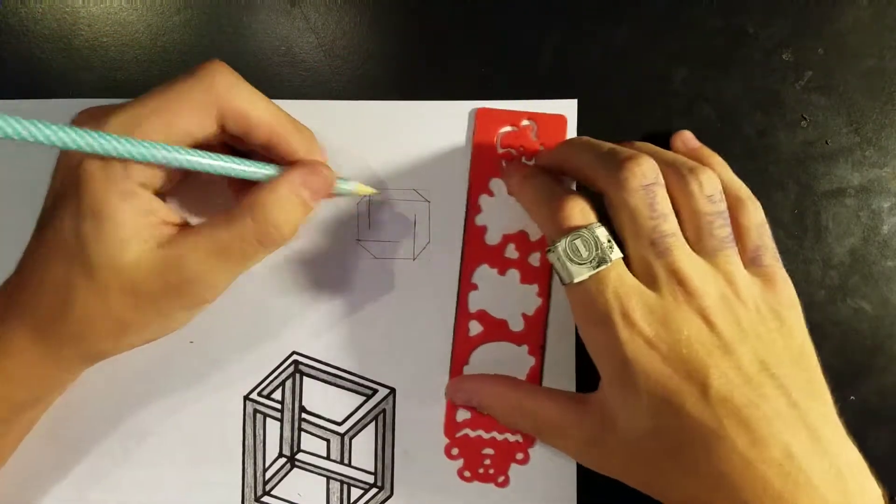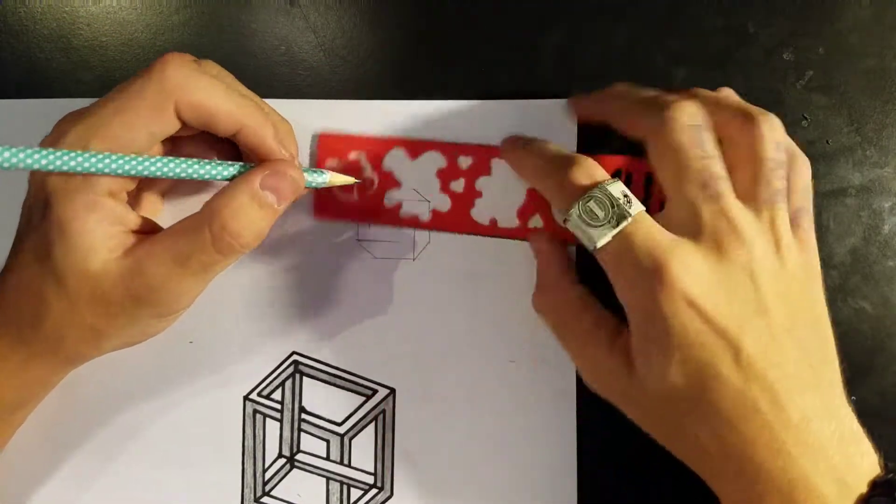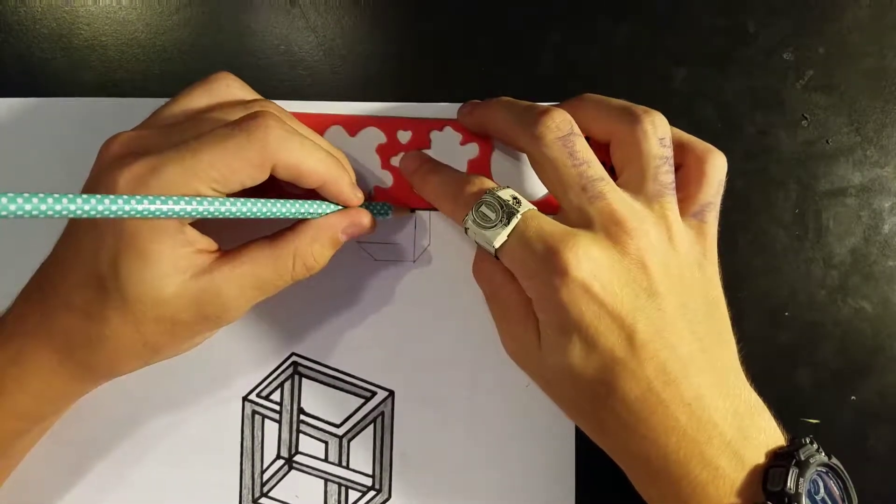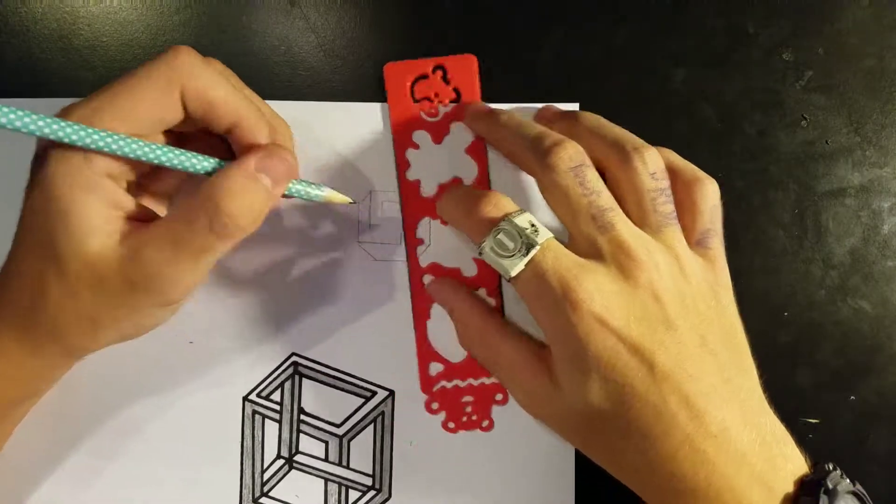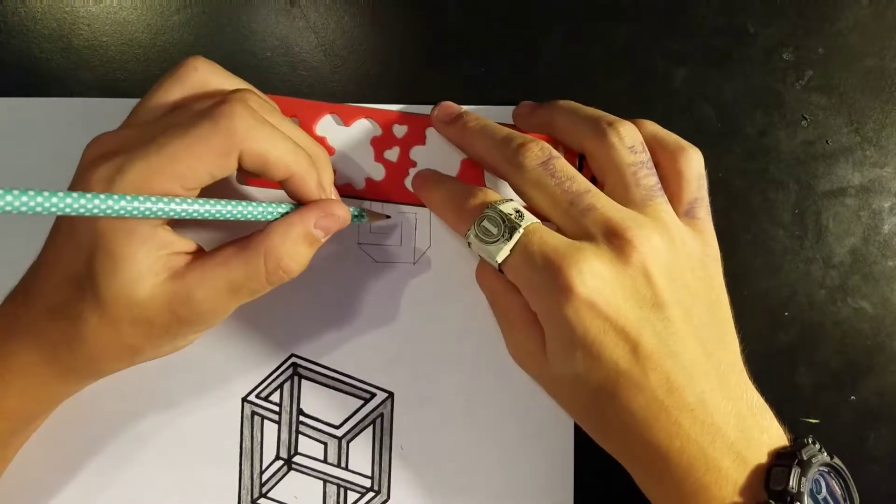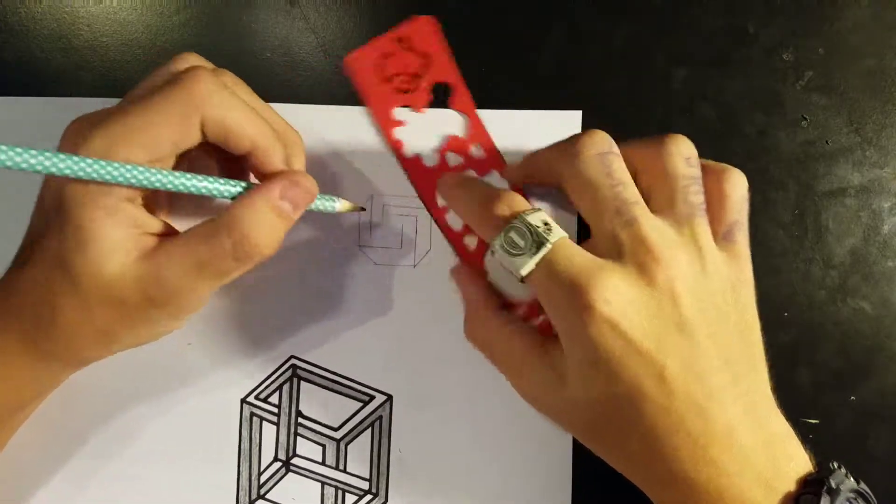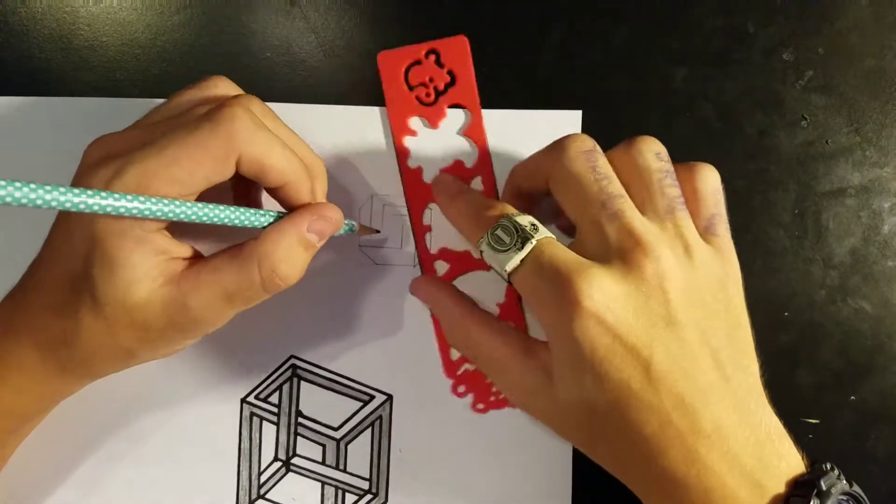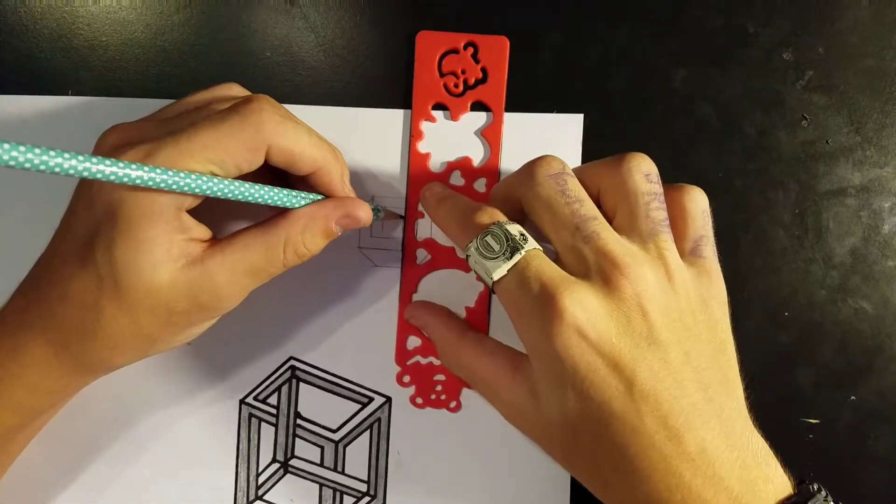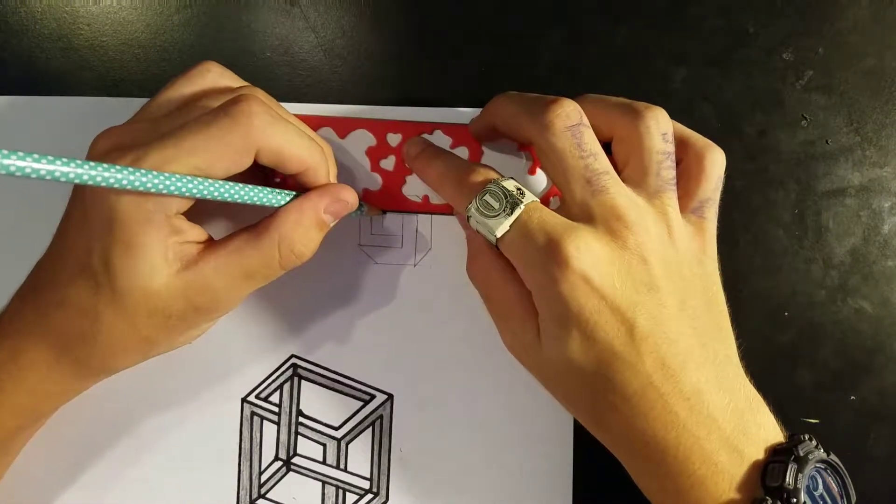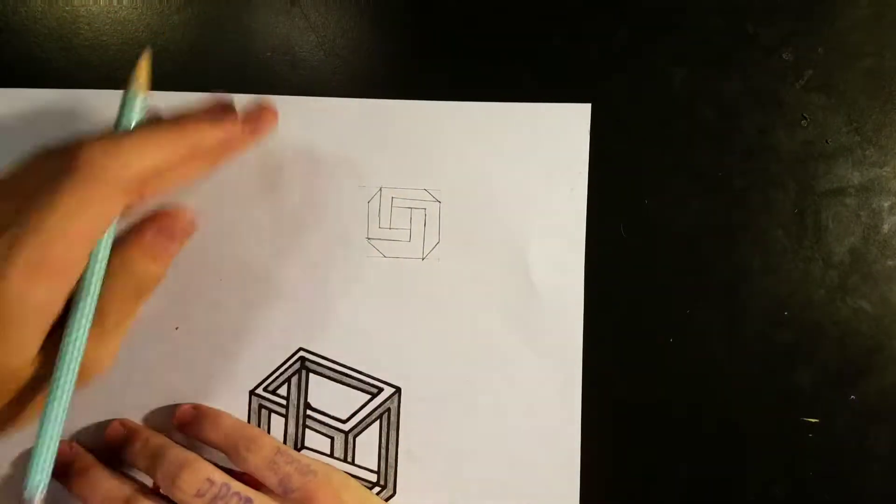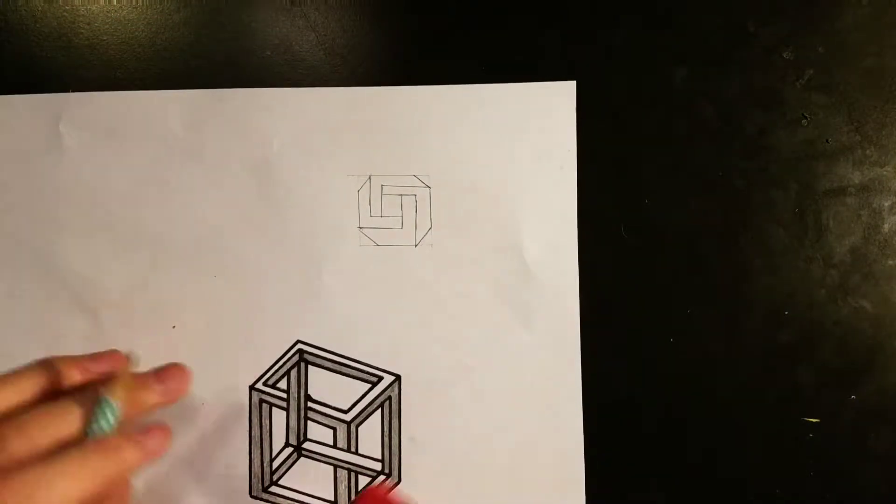So it should look like this now. Now what we're going to do is these lines, we're going to make them go in just a little bit. But this one, it should be a little longer. Okay. Just follow what I do.